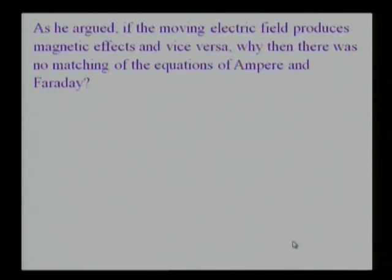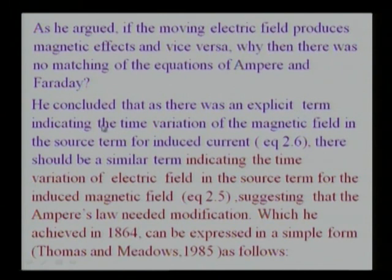As he argued, if the moving electric field produces magnetic effects and vice versa, why then was there no matching in the equations of Ampere and Faraday? He concluded that as there was an explicit term indicating the time variation of the magnetic field in the source term for induced current, there should be a similar term indicating the time variation of the electric field in the source term for induced magnetic field, suggesting that Ampere's law needed modification.